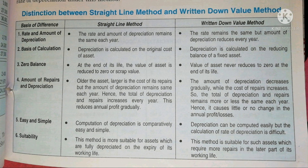Whereas under the Written Down Value Method, this method is suitable for assets which require more repairs in the later part of their working life. For example, if an asset has a working life of 10 years, it requires more repairs toward the end of its life. So the Written Down Value Method is more suitable for such assets which require more repairs in the later part of their working life.